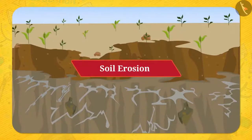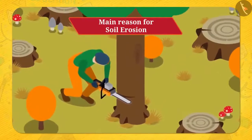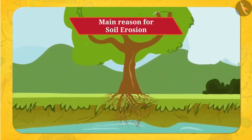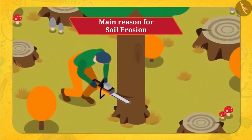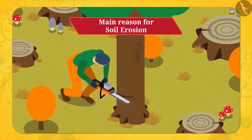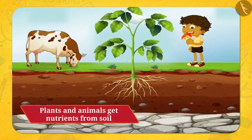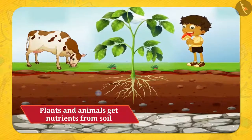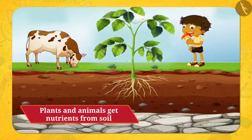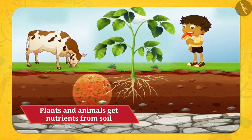The main reason for soil erosion is deforestation. The roots of the tree hold the soil tightly and protect it from being washed away. And if the trees are cut down, there will be no roots to hold the soil tightly, and it will get easily washed away, which will lead to soil erosion. Friends, soil is very useful to all. The trees get nutrition from the soil, and when humans and animals consume the plants, the same nutrition comes into their bodies.